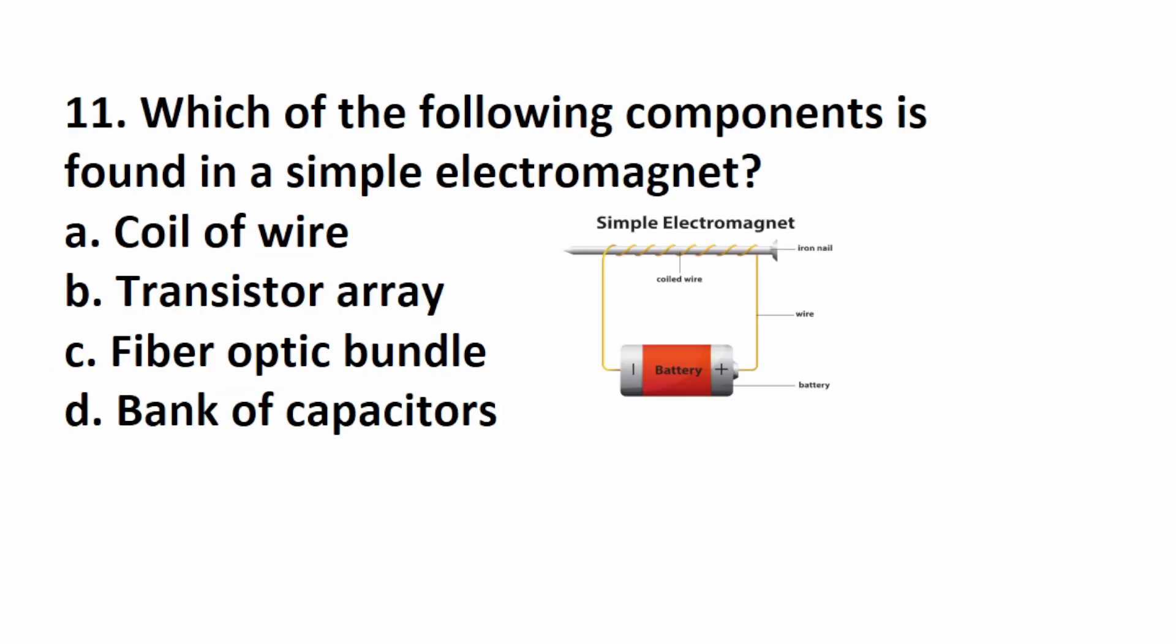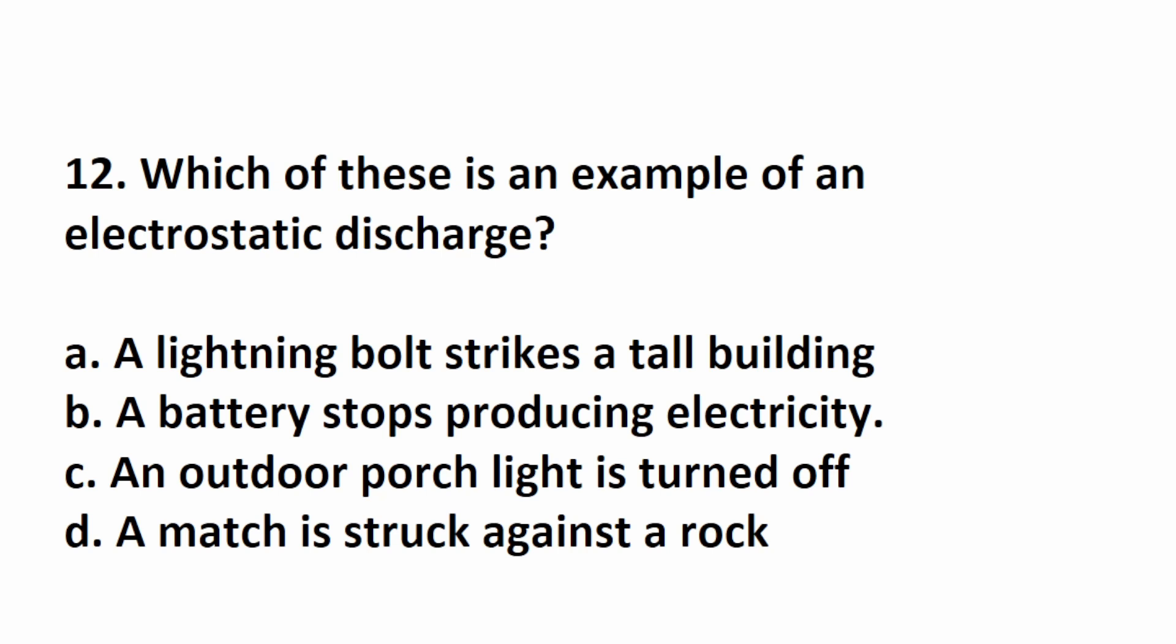Number 11 says, which of the following components is found in a simple electromagnet? Here's an example of a very simple electromagnet. You have a battery. From that battery, you have a wire that is coiled around an iron nail. So in order to have an electromagnet, you need A, a coil of wire.